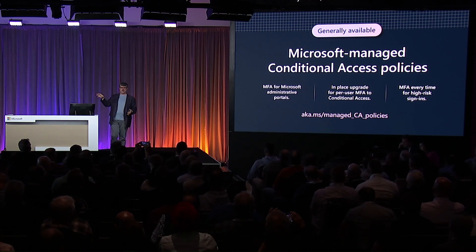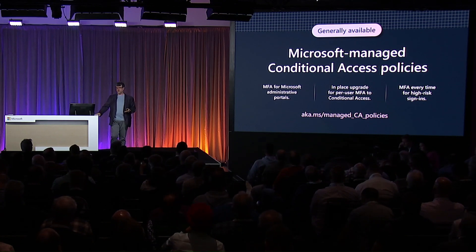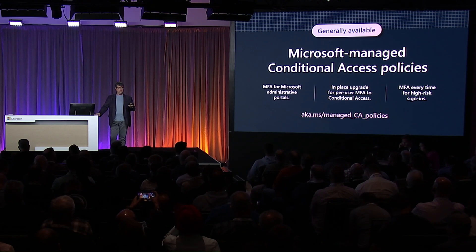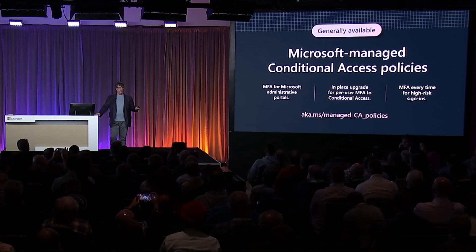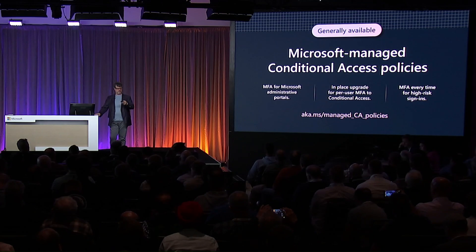These three managed policies are rolling out right now as the first wave of what we hope will be the center of our program going forward — we will eventually be able to use the machine learning work we've been doing to analyze your particular tenant, your particular risks, and hand you a policy and say, we think this is the policy that's right for you. You can tune it or not tune it, accept it or not accept it. This is where we think we get to 80% from 38% at MFA.